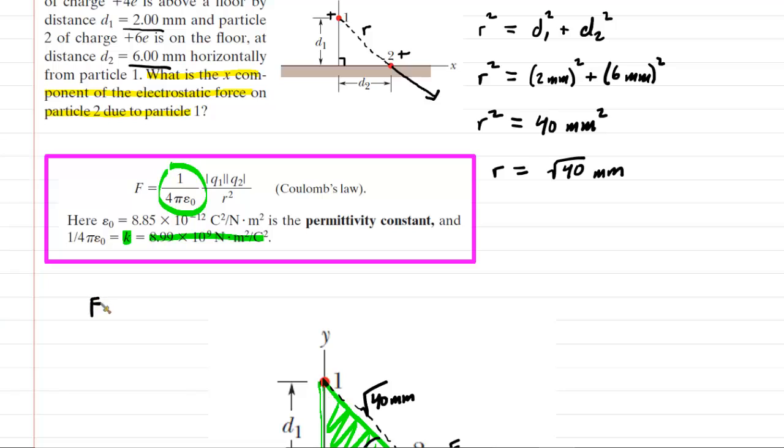f is equal to the k value of 8.99 times 10 to the power of 9. And then this is going to be in this weird unit of Newton meter squared per Coulomb squared. And then multiply that by q1. Now, q1 was stated in the question to be positive 4e. It said positive 4e.